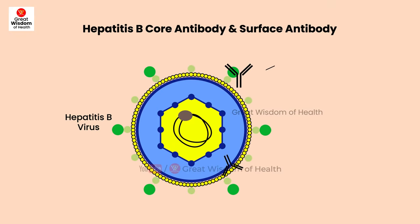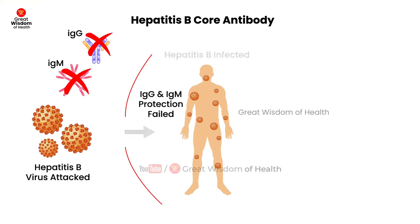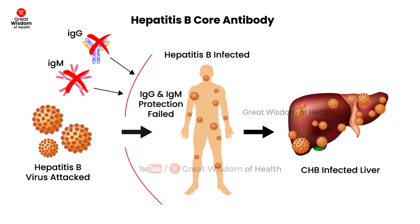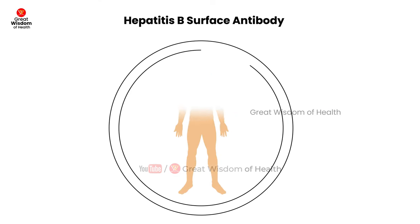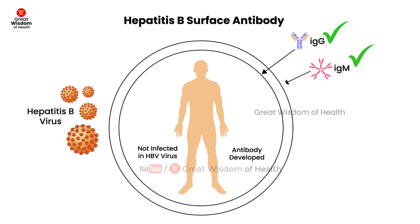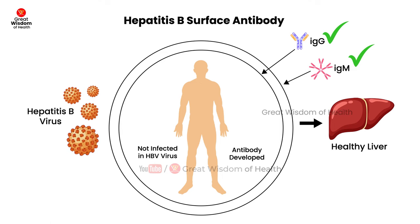Difference between hepatitis B core antibody and surface antibody. Hepatitis B core antibody: a positive hepatitis B core antibody test may mean you have a current or past hepatitis B infection. Hepatitis B surface antibody: a positive hepatitis B surface antibody test means you are protected against the hepatitis B virus — this could be from getting the hepatitis B vaccine or from a past hepatitis B infection.